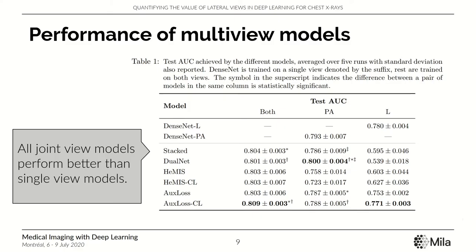For our experiments, we trained our models and tested them in three different paradigms based on what views were available in the test dataset. 'Both' means both views were given as input for all patients. 'PA' means only the PA was given, and 'L' means only the lateral view was given. When both views are available, multi-view models are definitely better than a single-view model, with little difference between the models themselves. But when given only one view, differences emerge — most models perform poorly when given only the lateral view, as seen in the rightmost column.